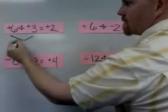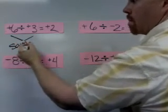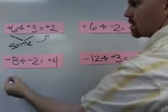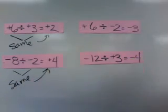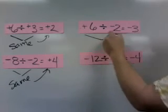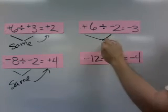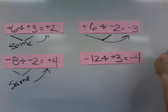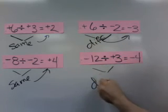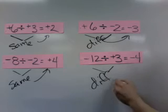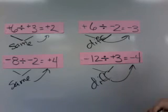If the signs are the same, the answer is positive. If the signs are the same, the answer is positive. Over here, the signs are different. The answer is negative. So the signs are different. Over here, the signs are different. And so the answer is negative. What does this sound like?